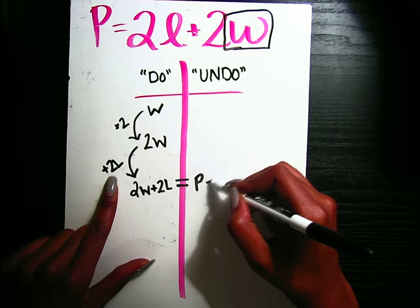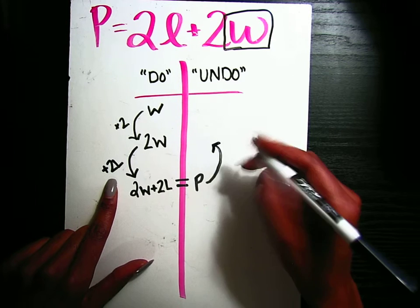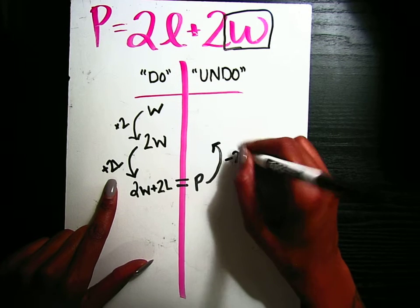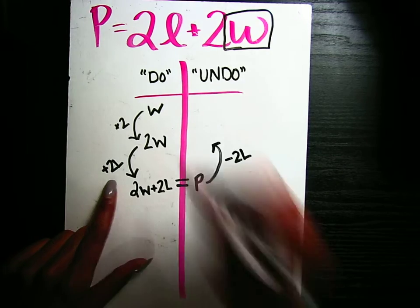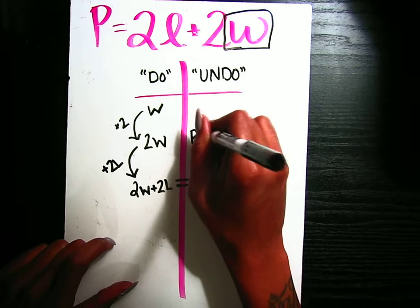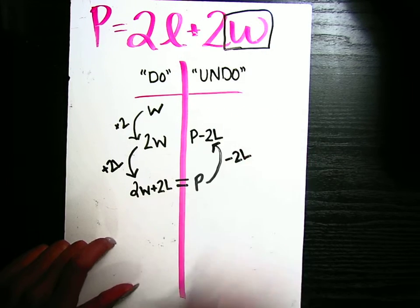Instead of adding 2L on the undo side, we're going to do the opposite, which is subtract 2L. So in here we're going to have P minus 2L.